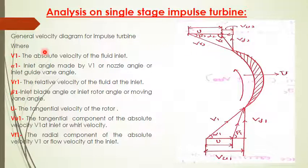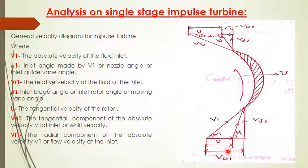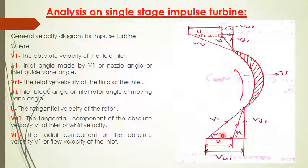Let us understand the terms involved in velocity triangles. V1 is the absolute velocity of the steam at inlet — this line represents the absolute velocity of the steam at inlet of the blade. Alpha1 is the inlet angle made by V1, which means the absolute velocity. We can also call it the nozzle angle or inlet guide vane angle.